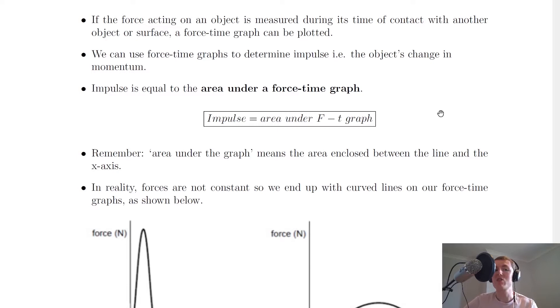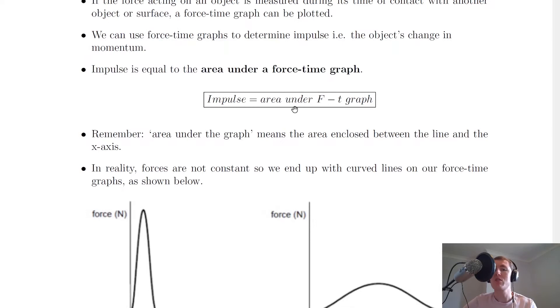It's a bit like how distance or displacement is equal to the area under a speed or velocity time graph. So I put this result in a box just because it's important: impulse equals the area under an F-t graph.